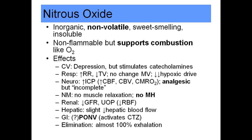Nitrous oxide does not cause any muscle relaxation of any kind, and it does not trigger malignant hyperthermia. In the renal system, it does decrease urine output slightly due to decreased renal flow. It decreases hepatic flow slightly. Nitrous has been implicated as a cause of postoperative nausea and vomiting, and is eliminated almost 100% by exhalation — there is no metabolism of nitrous oxide.